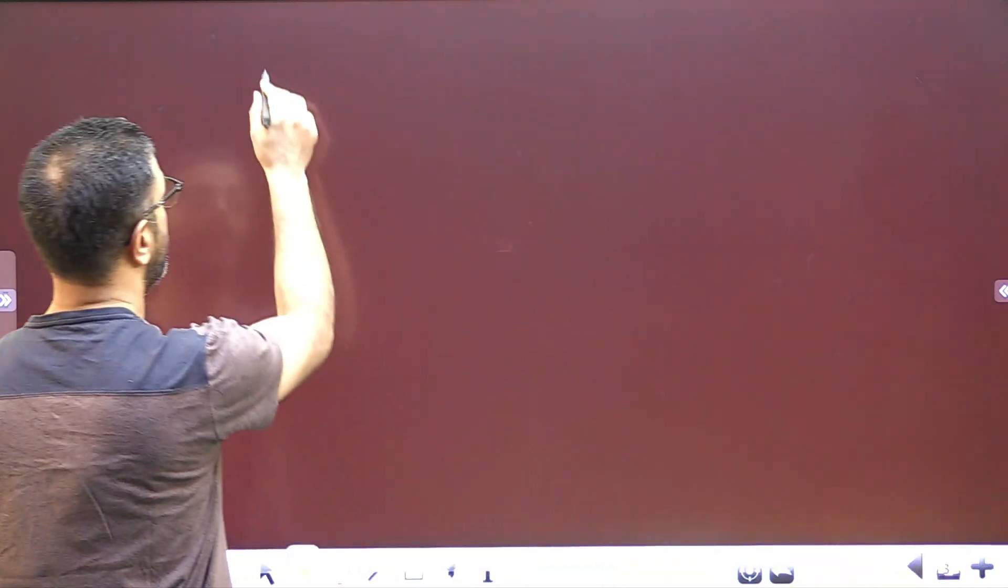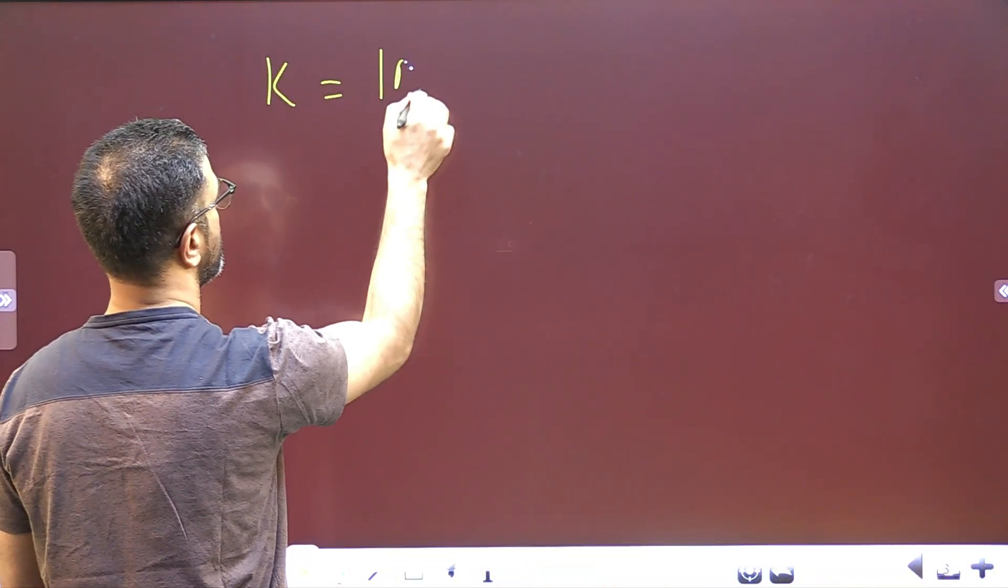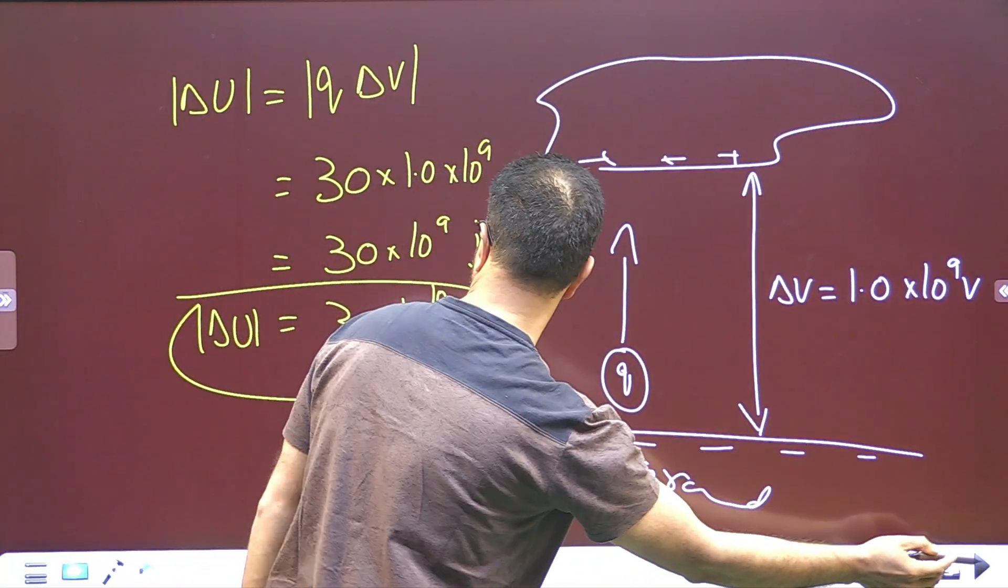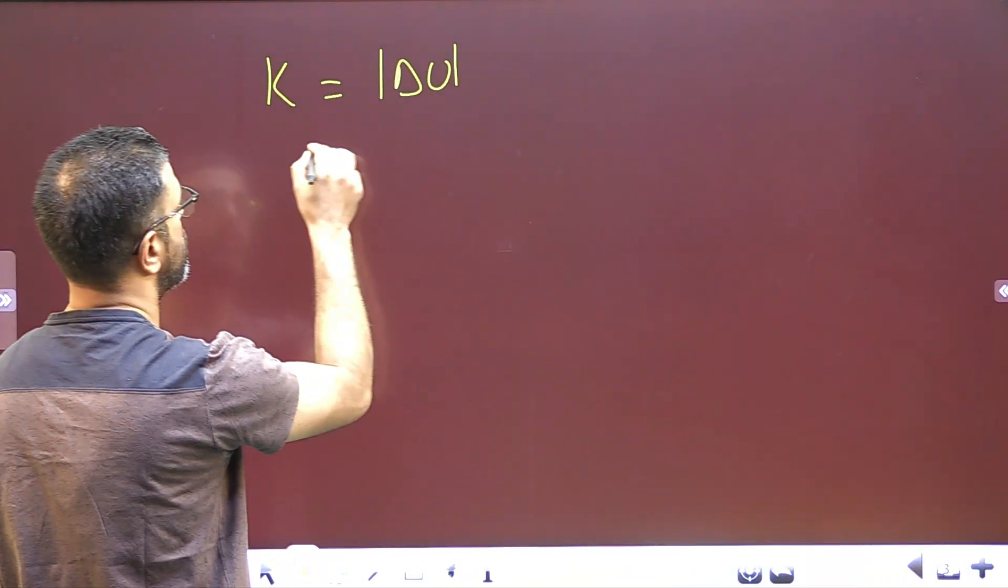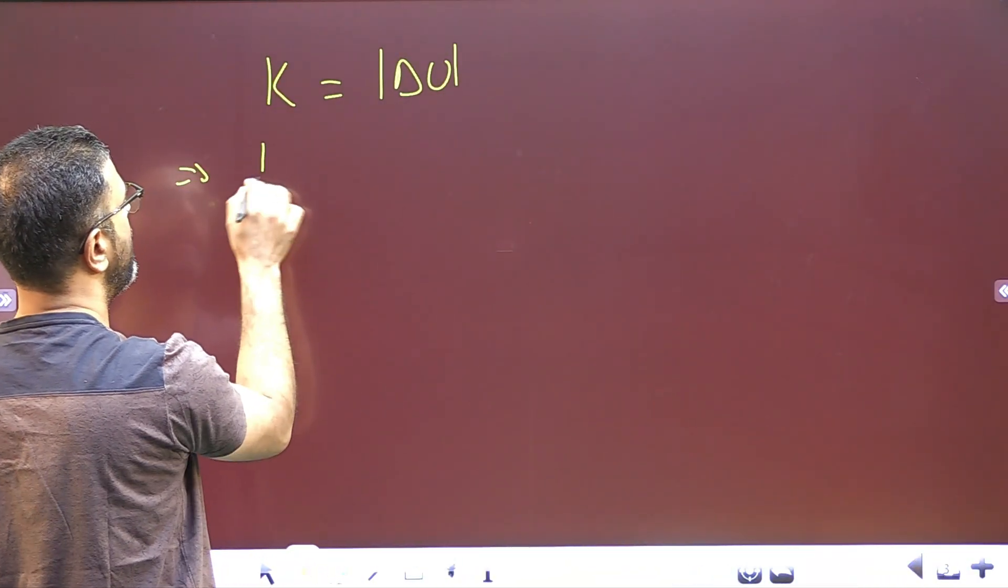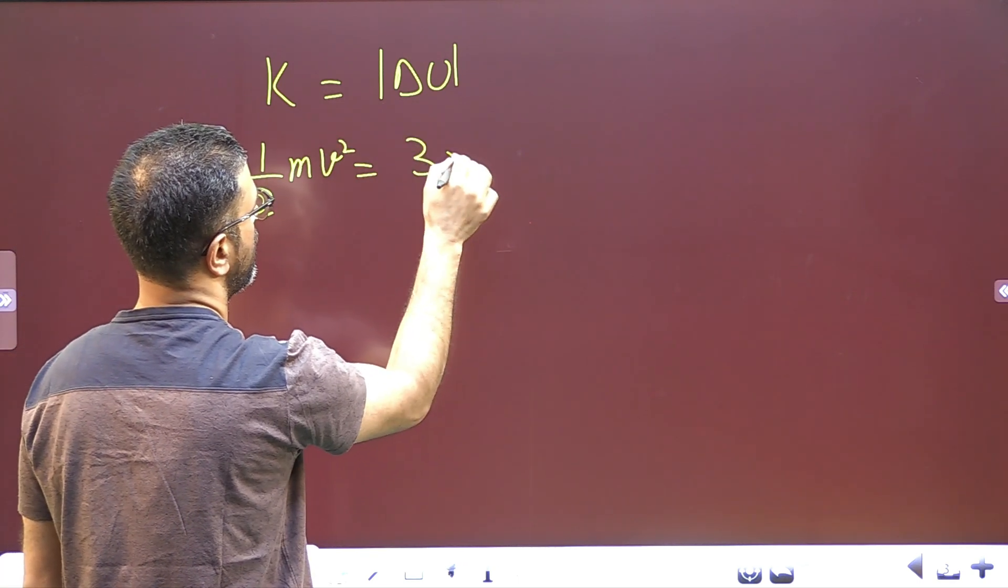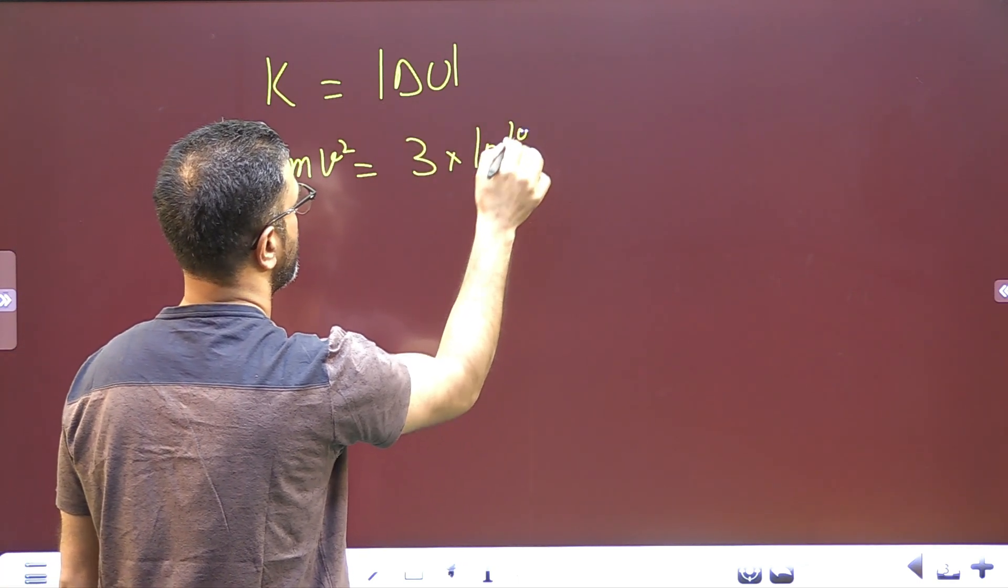So, final kinetic energy of the car will be simply change in energy, which we got here, the energy which we get here, delta U, which is 3 into 10 to the power 10 joules. So, this implies kinetic energy, half of Mv squared is equal to 3 into 10 to the power 10 joules.